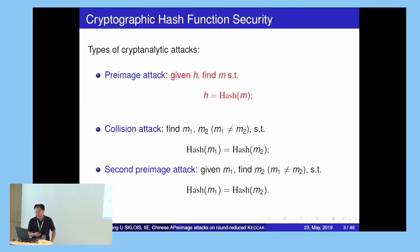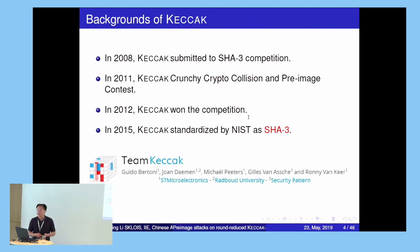There are three types of attacks on a hash function: pre-image attack, collision attack, and the second pre-image attack. Our work focuses on the pre-image attack — that is, given a digest H, we need to find a message M such that H equals hash(M). This is a short introduction to the Keccak algorithm, which is the most important hash function at present.